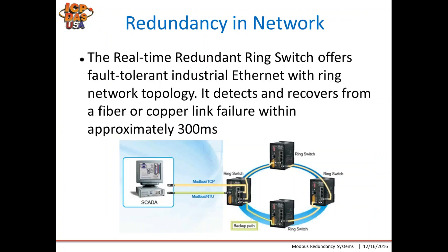Redundancy in networks: the real-time redundant ring switch offers fault tolerance for our ring network topology. It detects and recovers a fiber, copper, or RJ45 link failure within 300 milliseconds. The picture shown here is an example of our ring switches where if any one switch fails, it will have a backup path which it can revert to if communication is lost.